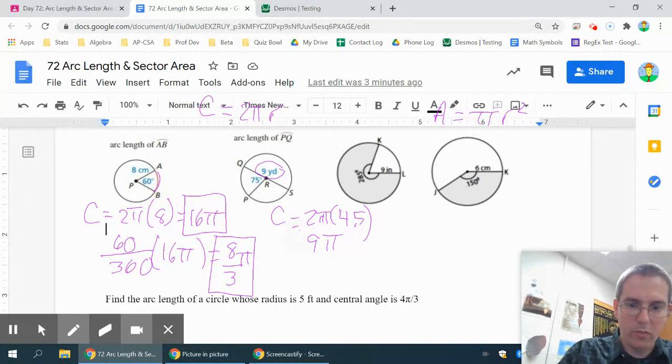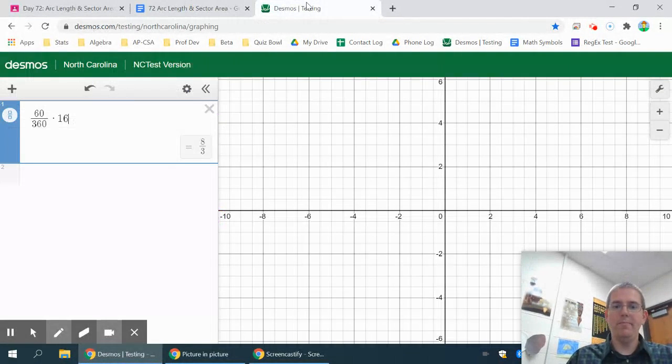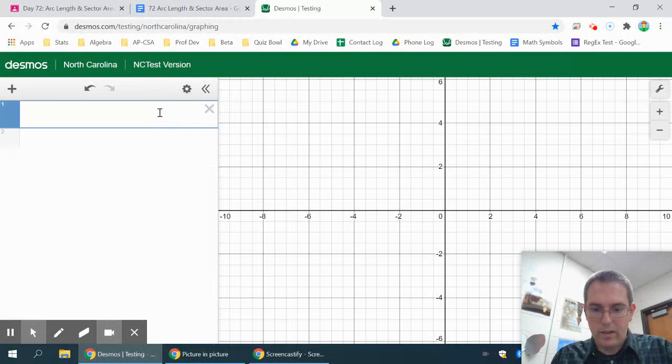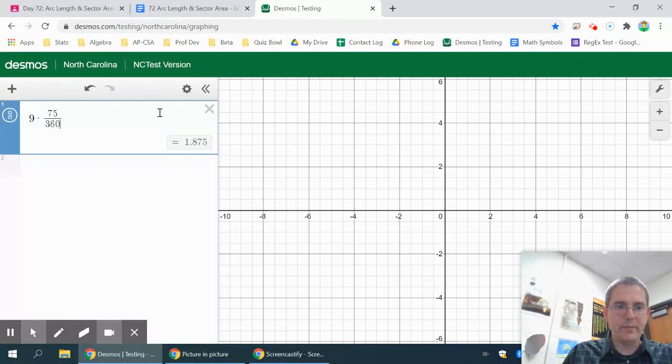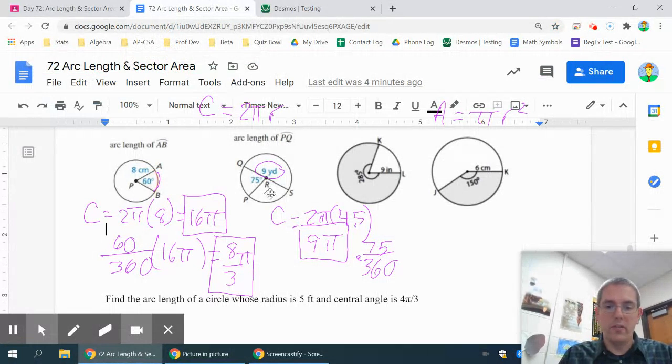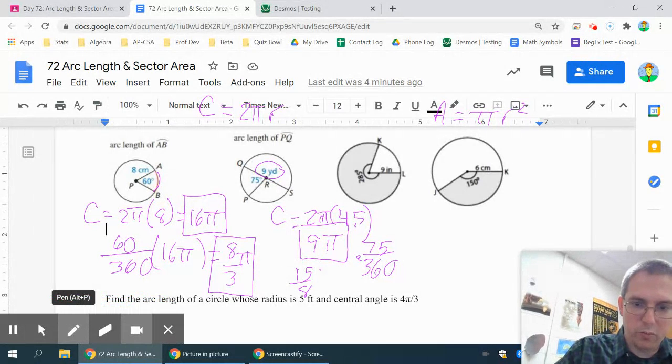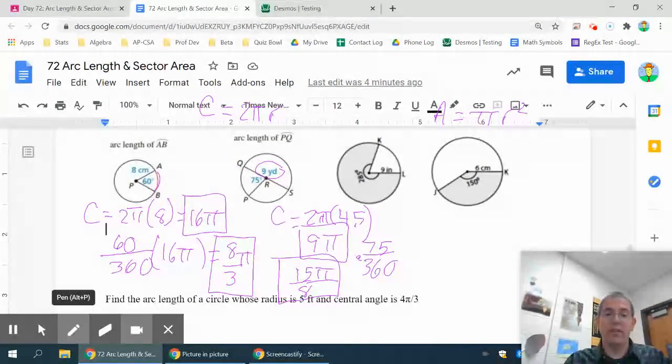And then to find your arc, you would multiply your 9π times 75 over 360. Reach for Desmos again. 9 times 75 over 360 is 1.875. As a fraction, that's how we usually want them. It's 15 over 8. So I have 15 over 8. And don't forget to put π with it. You can just put the π out to the side, or you can put it on top with the 15. Same difference, 15π over 8. 15 over 8 times π, same thing. That's how you do arc length.